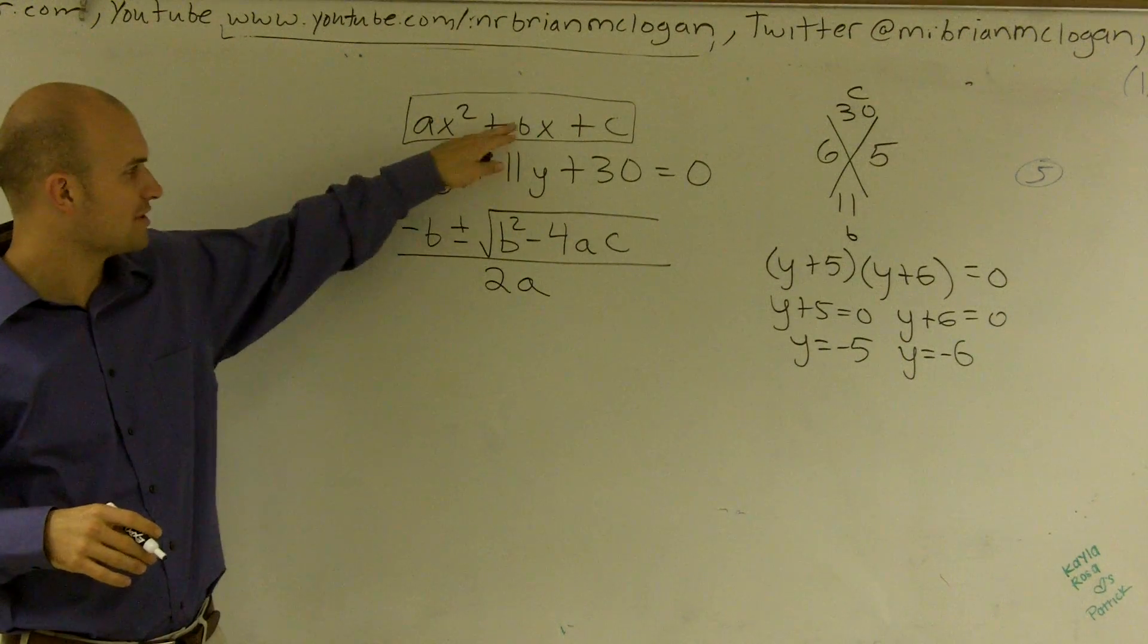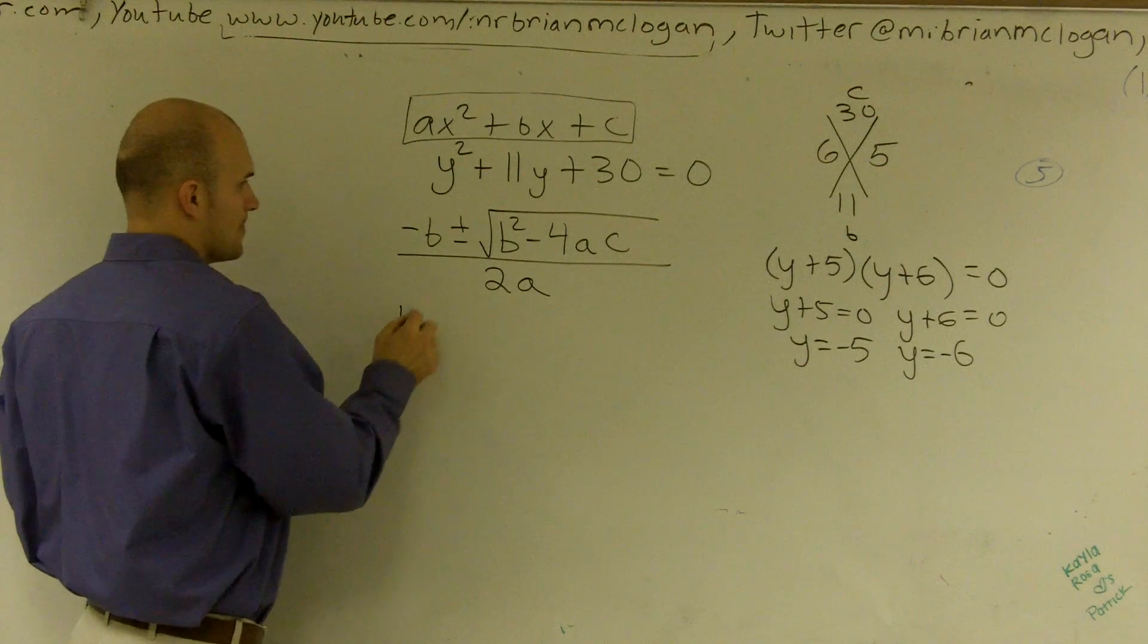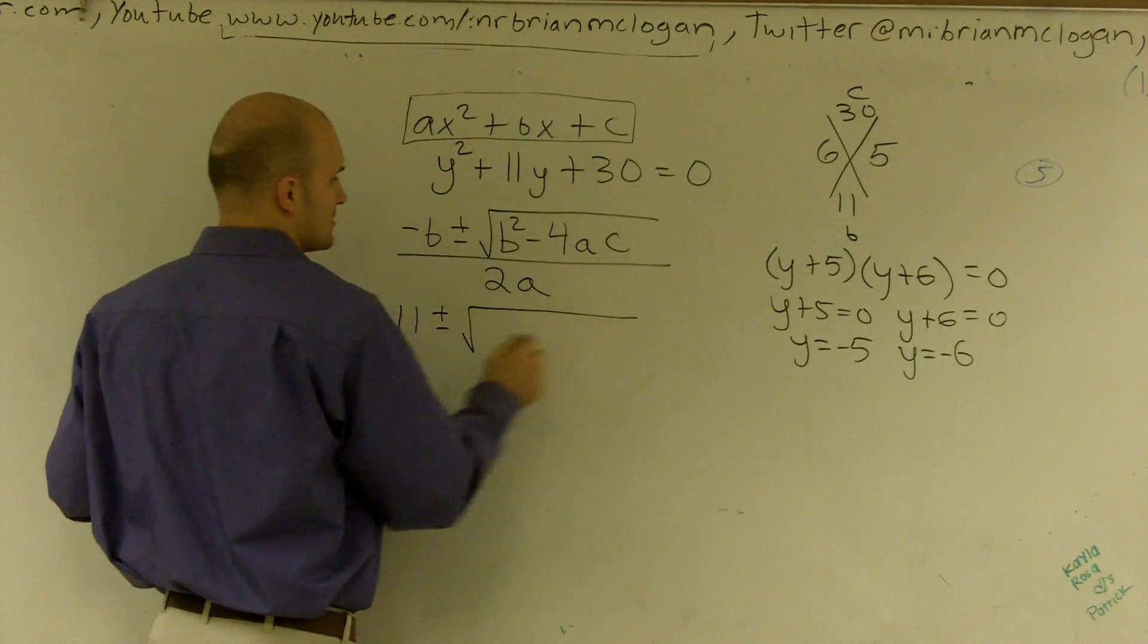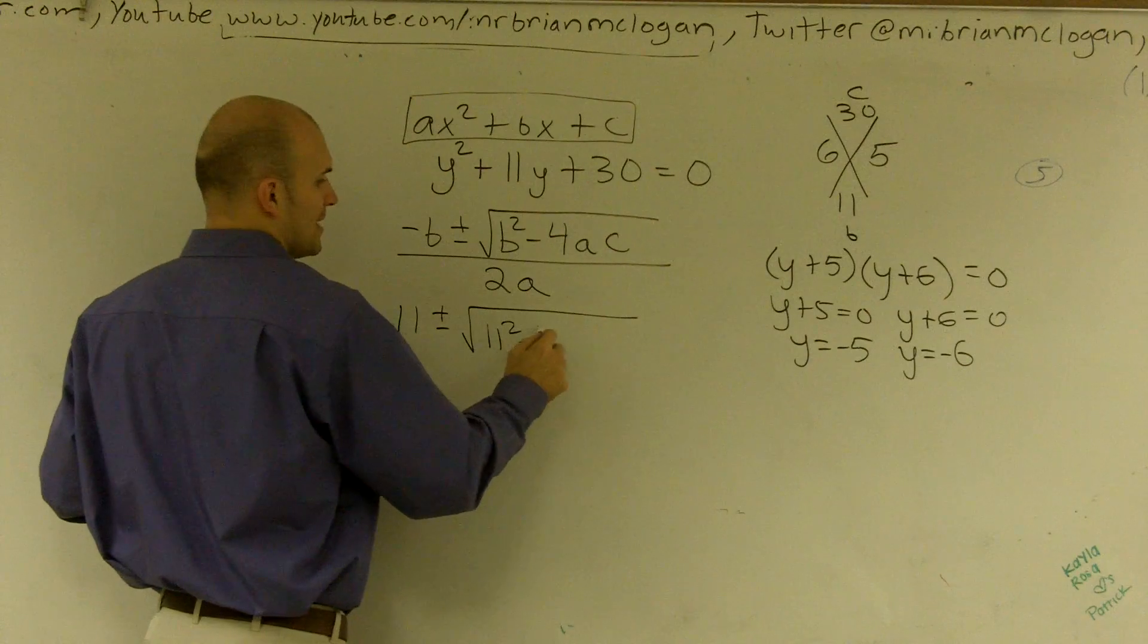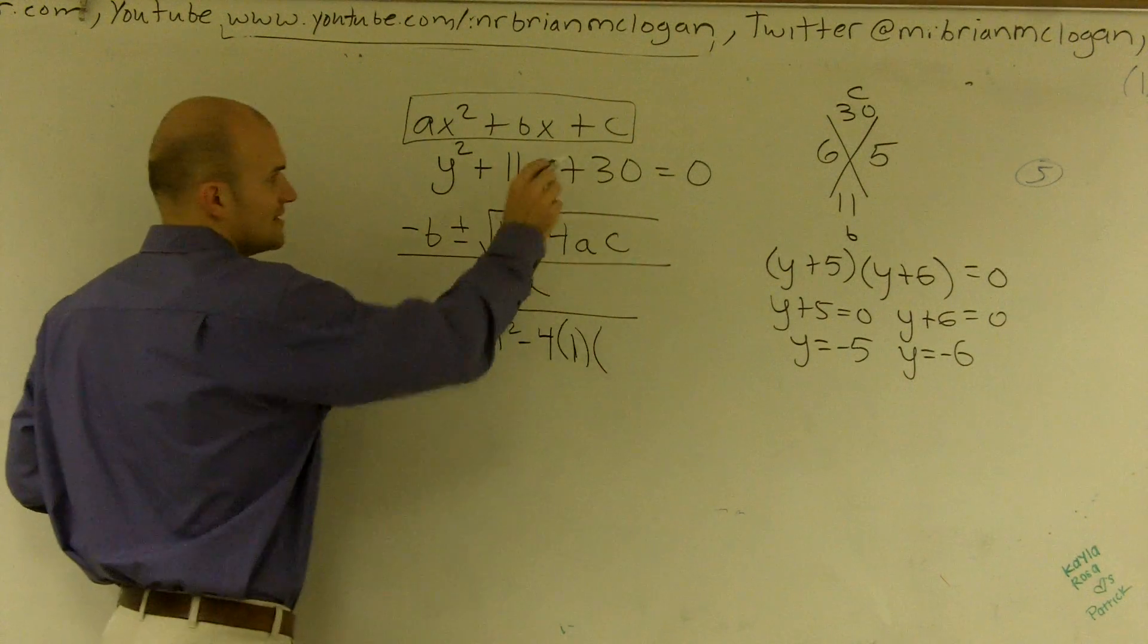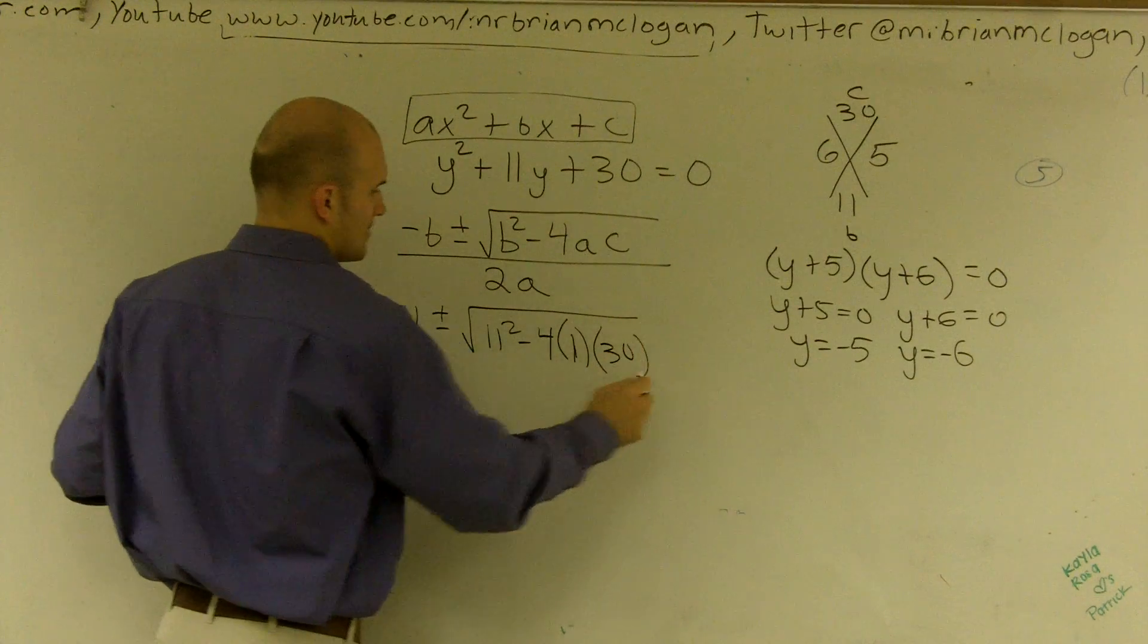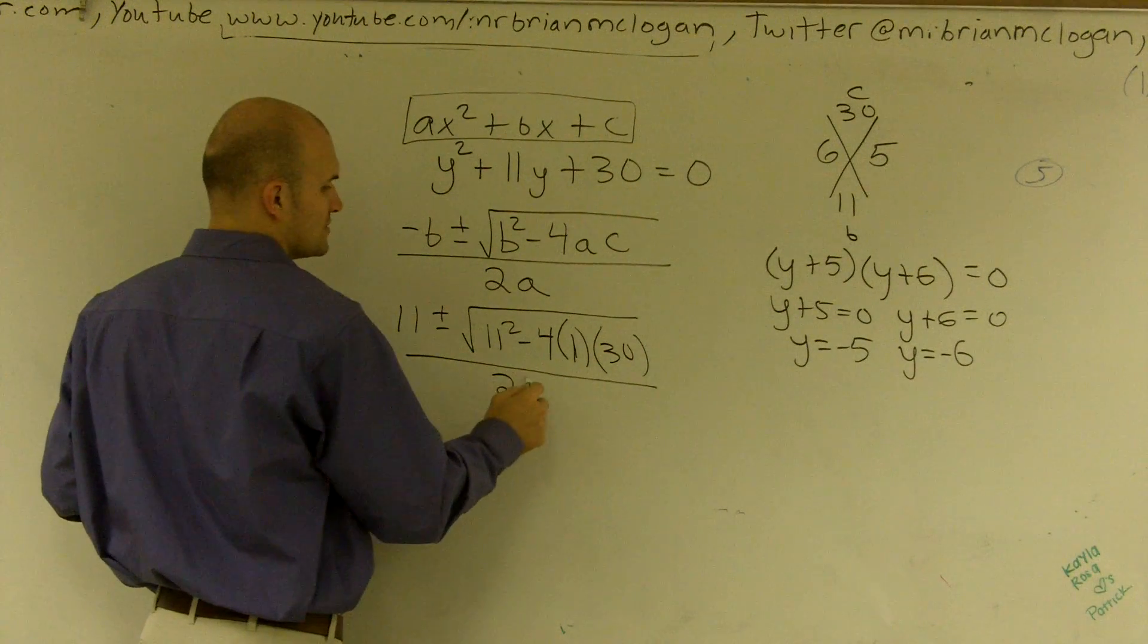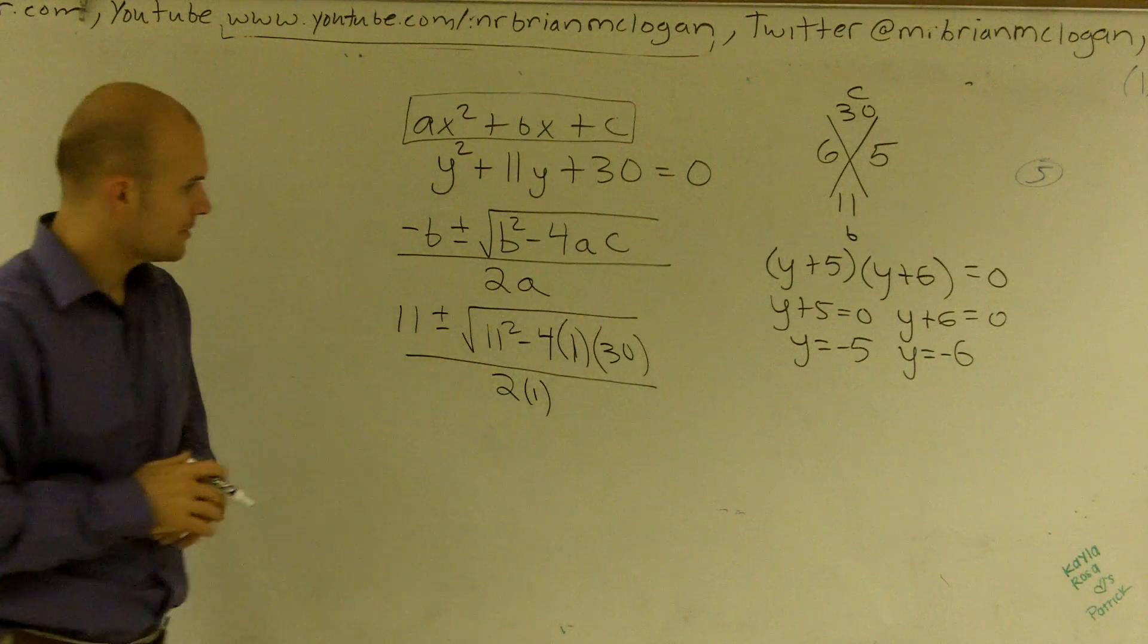So up here, if I look at my b, it's going to be 11 plus or minus the square root of 11 squared minus 4 times 1 times my c, which is 30, all over 2 times 1.